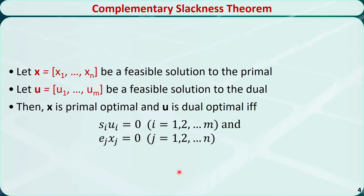Let x — x1 through xn — be a feasible solution to the primal, and u — u1 through um — be a feasible solution to the dual. Then x is primal optimal and u is dual optimal if and only if the product of the slack variable si in the primal and the dual variable ui is equal to zero, and the product of the excess variable ej in the dual and the primal variable xj is also equal to zero.